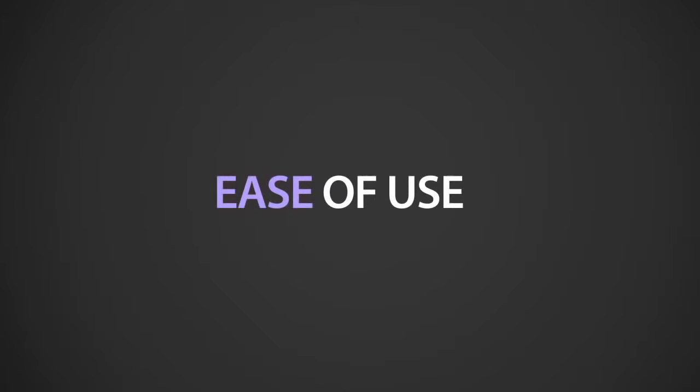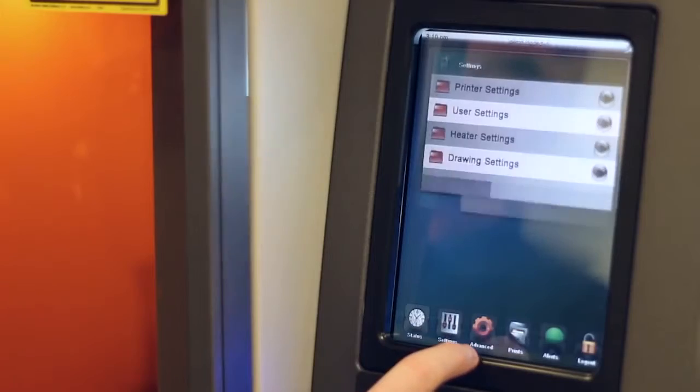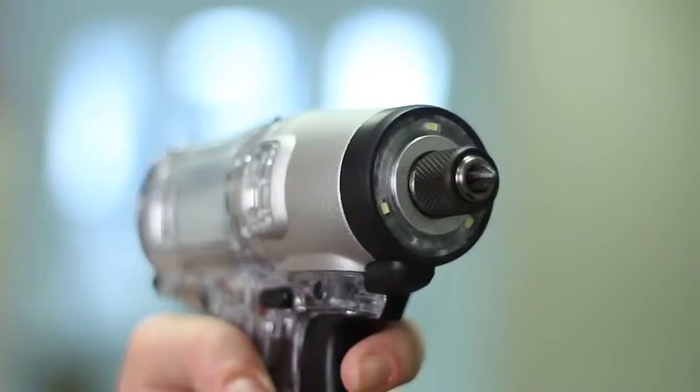With a convenient touchscreen interface and a simple top change material station, it's easy to print prototypes or functional parts and take advantage of the unparalleled material choices the 6000 and 7000 have to offer.